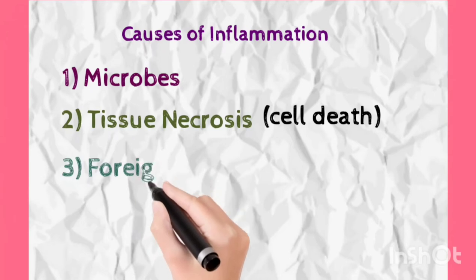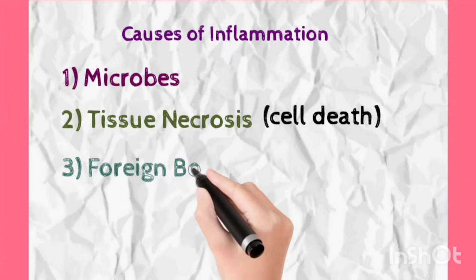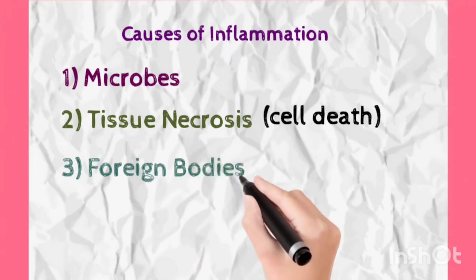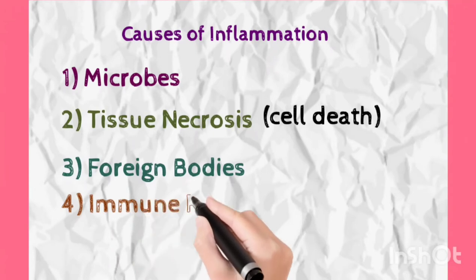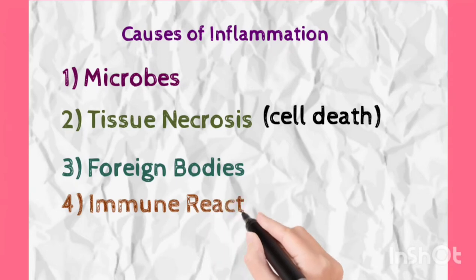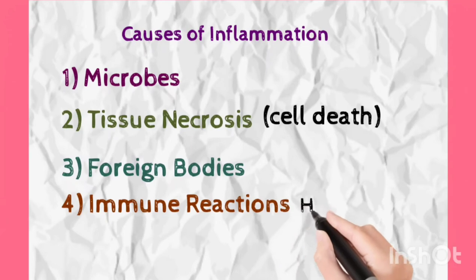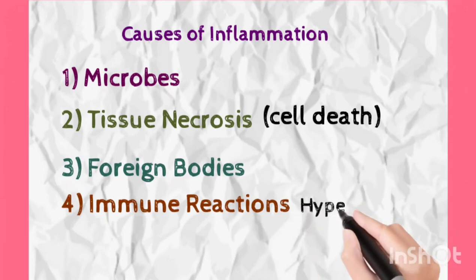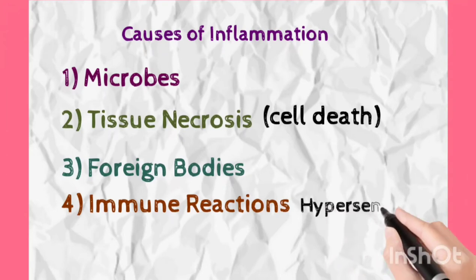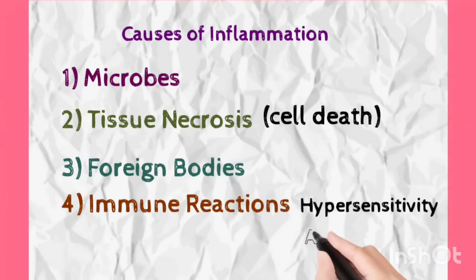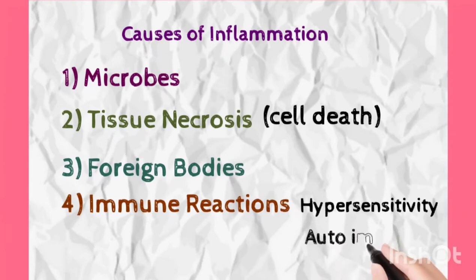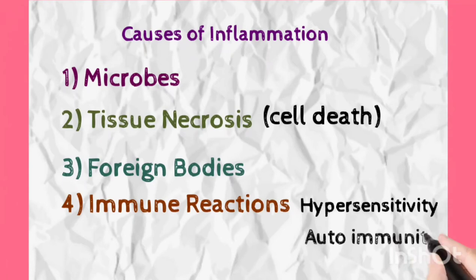Some people have heart prostheses implanted — the body does not accept them and treats them as foreign bodies, initiating inflammation. Similarly, when stitches or sutures are placed, the body sometimes does not accept them and instead inflammation occurs with pus formation. The last cause is immune reactions, which may include allergy — where our body unnecessarily reacts to small things. The other is autoimmunity, where our body synthesizes antibodies against our own cells, starting an inflammatory reaction. These were the four major causes of inflammation: microbes, tissue necrosis, foreign bodies, and immune reactions.